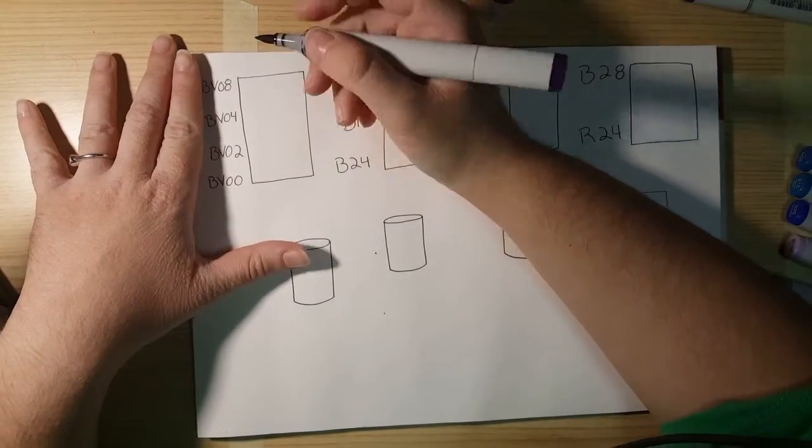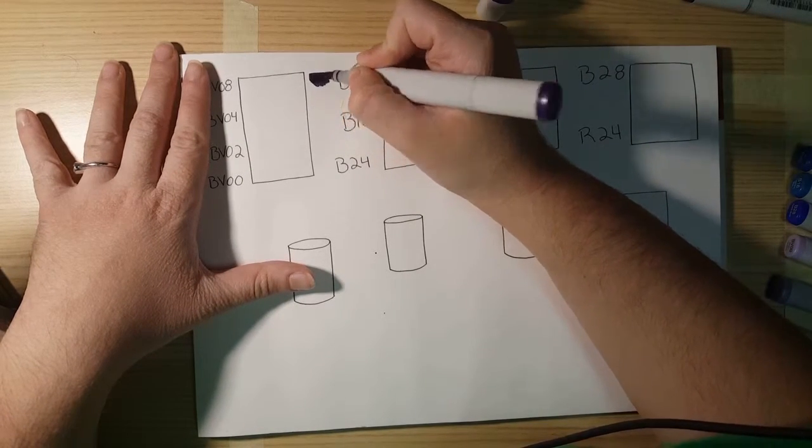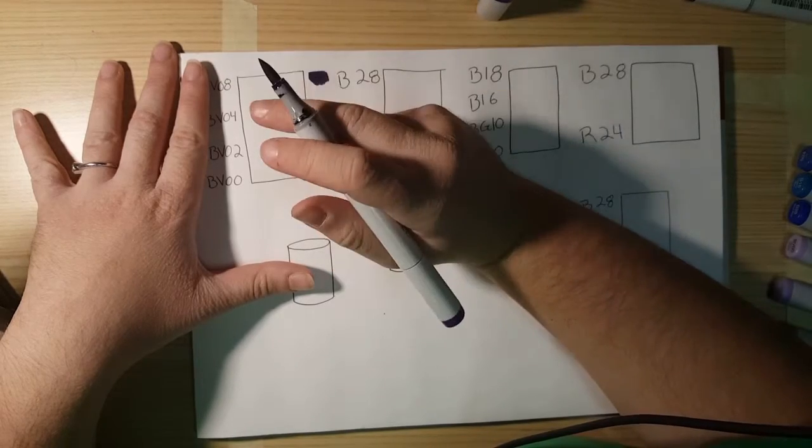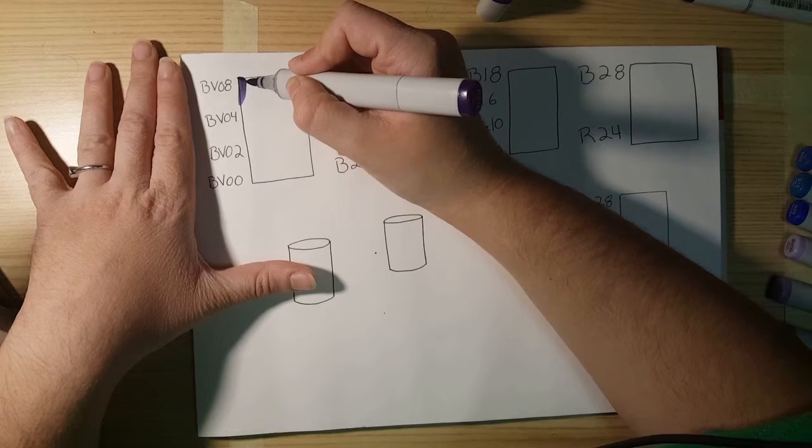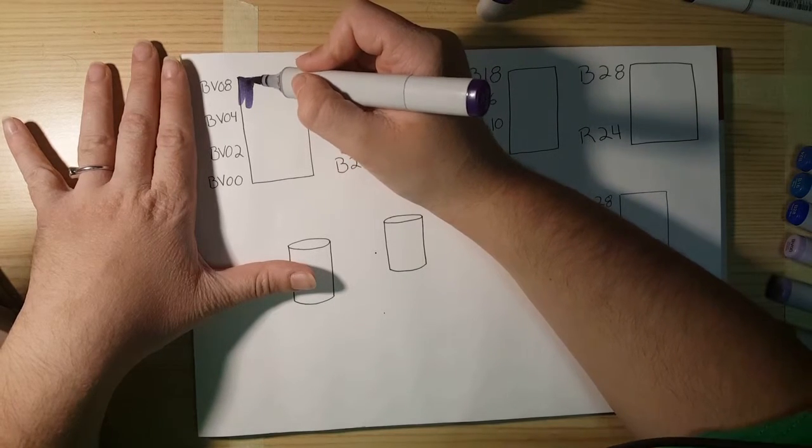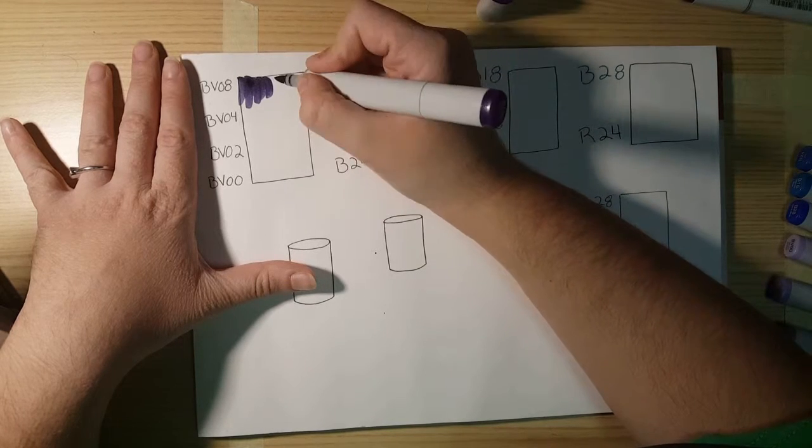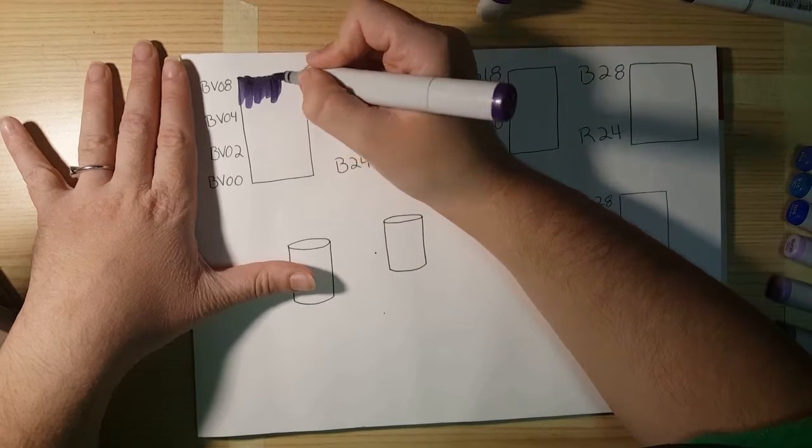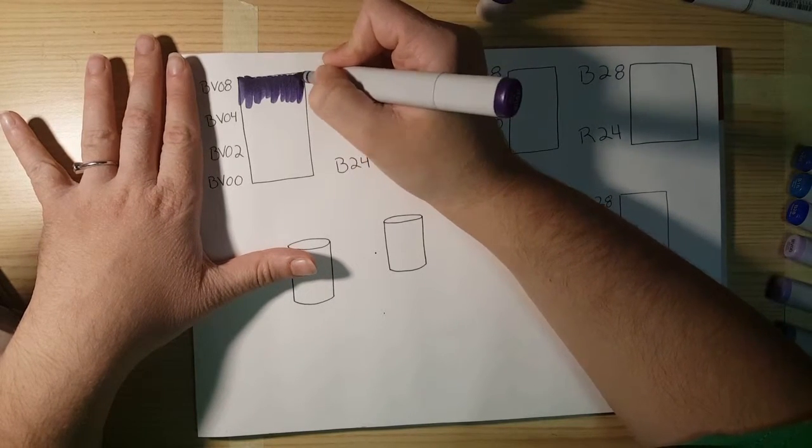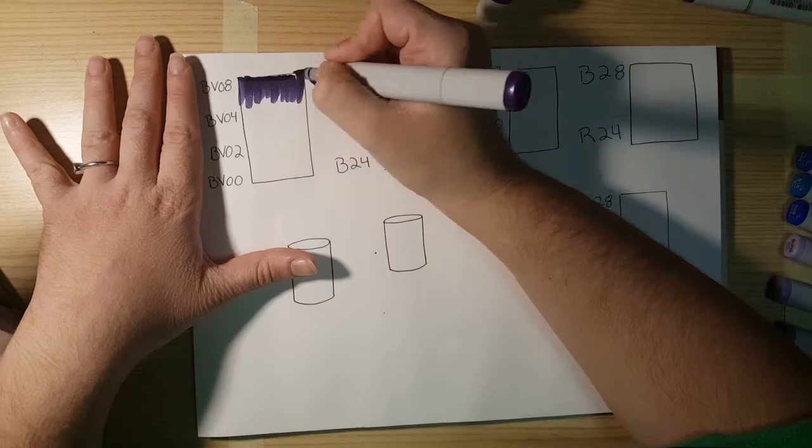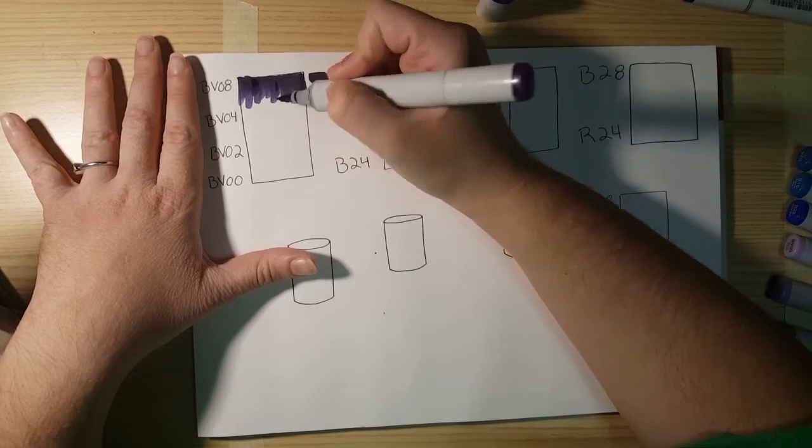So some people when they shade, they'll just go in and make a block and then try to blend it out. What I find works better for me is if I use this flicking motion. When I do this, at the beginning of the stroke, it's going to be a lot darker, whereas at the end of the stroke, it's going to be lighter, which makes it a little bit easier to blend out.